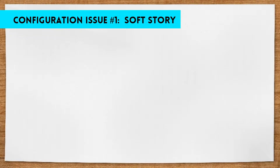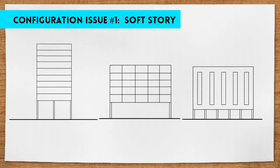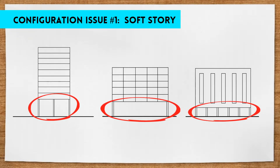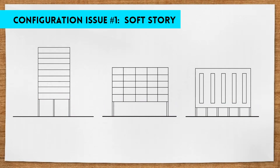The first one is known as soft stories. This occurs when the ground level story of a building is less stiff than the stories above it. The cumulative loads of the building are greatest at the base, so the discontinuity in stiffness or strength creates an issue at the ground level. The stress will concentrate where the ground story and second story meet, making drift or distortion occur right there, which then leads to collapse.